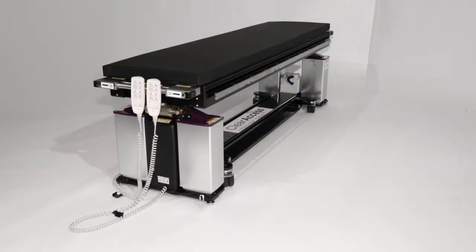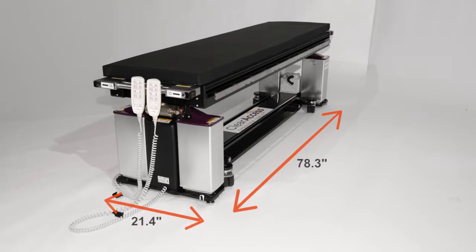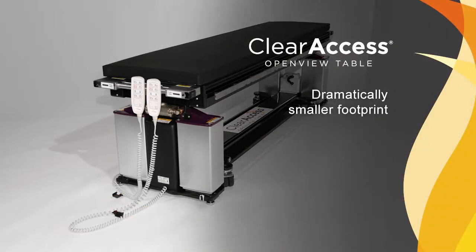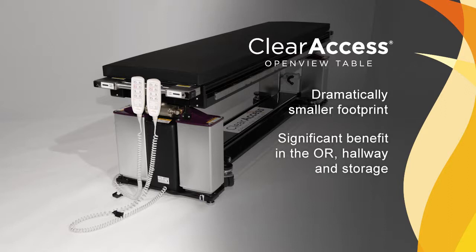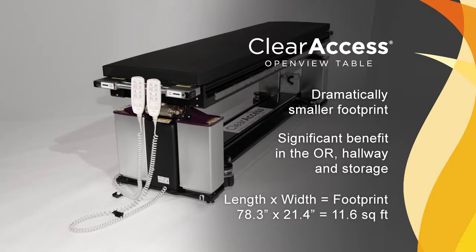Notice that without outboard wheels and towers, the ClearAccess table has a dramatically smaller footprint than the competitive systems. A small footprint has been shown to be a significant benefit in the increasingly crowded ORs, hallways, and storage areas of most facilities. Specifically, Jackson-style tables commonly occupy more than 26 square feet of space, while the ClearAccess footprint is less than 12 square feet.